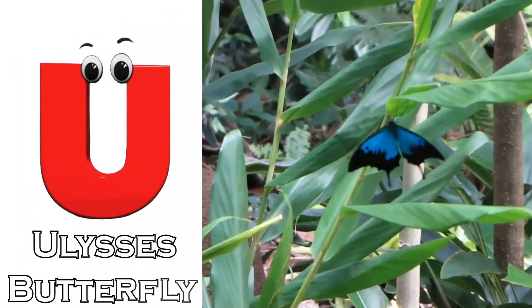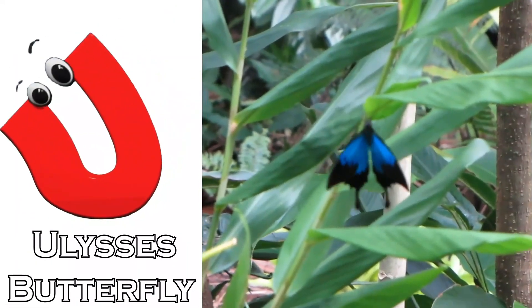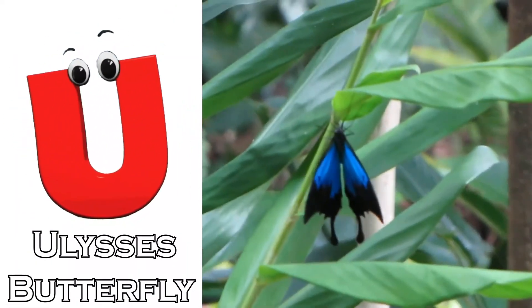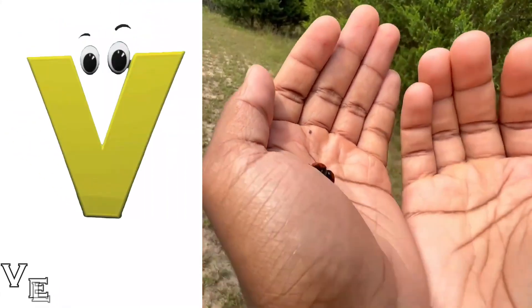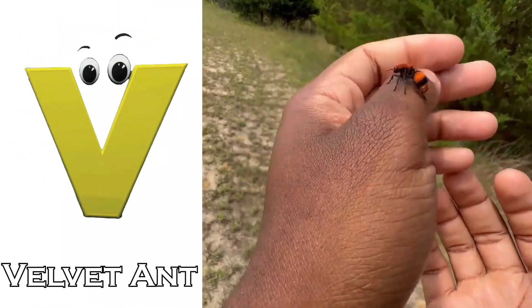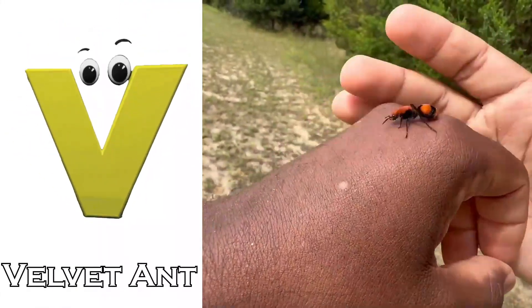U is for Ulysses Butterfly, U, Ulysses Butterfly. V is for Velvet Ant, V, V, Velvet Ant.